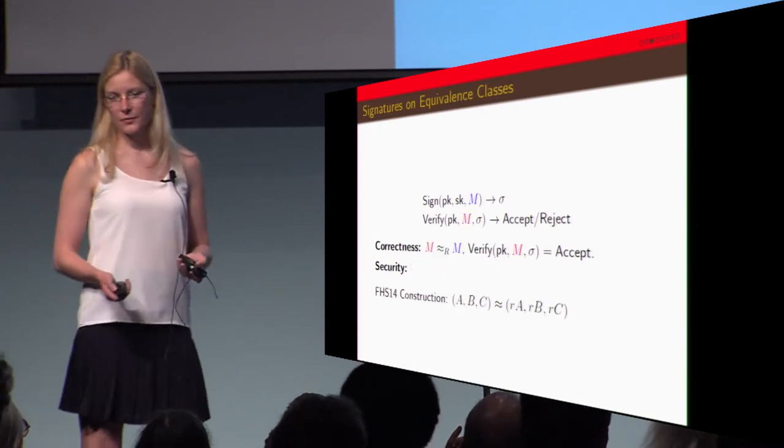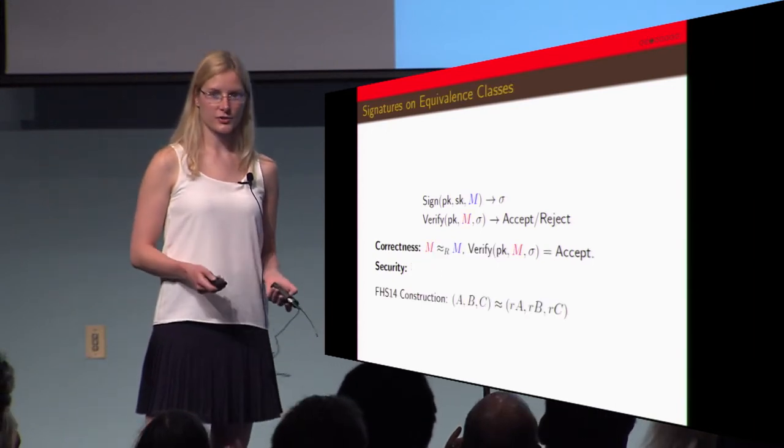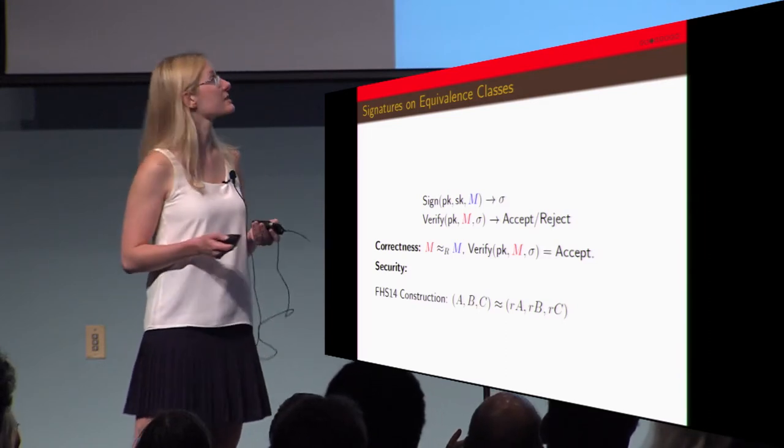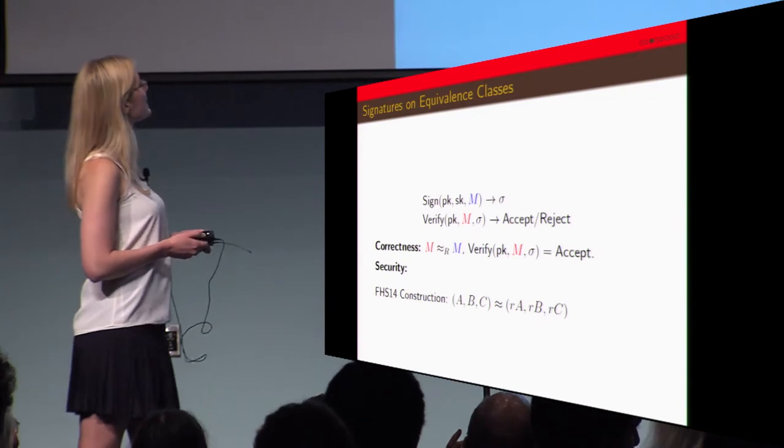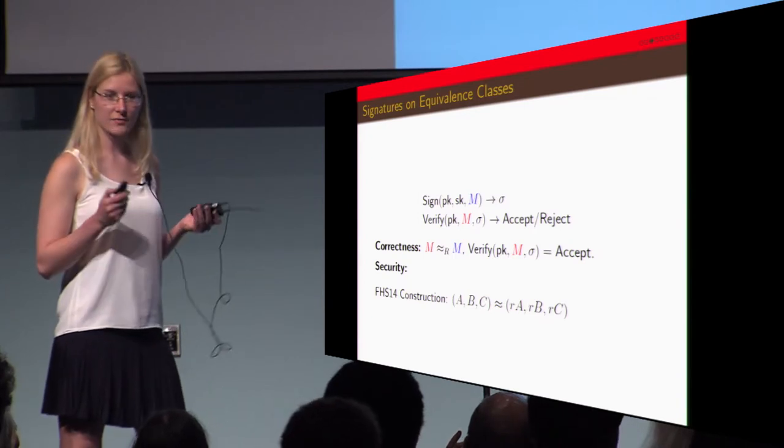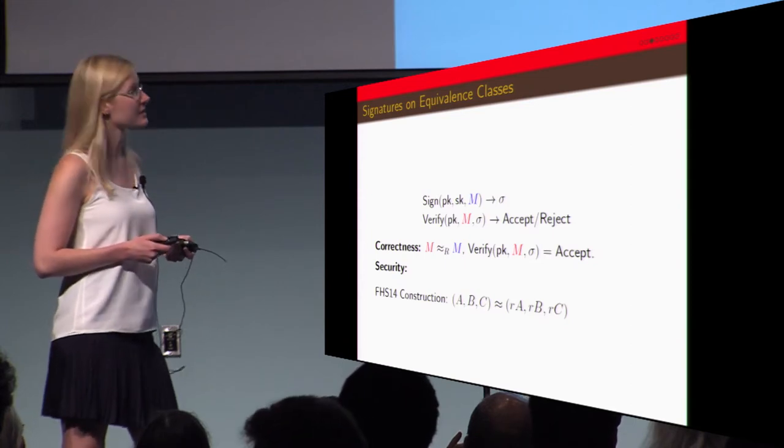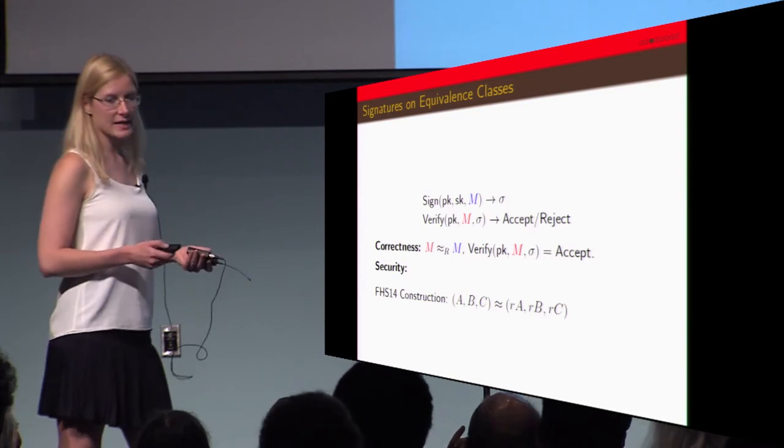We can take this one step further by introducing signatures on equivalence classes. In this case we're looking at messages in the same equivalence class, and correctness means that if we have messages within the same equivalence class then the verify algorithm will accept.